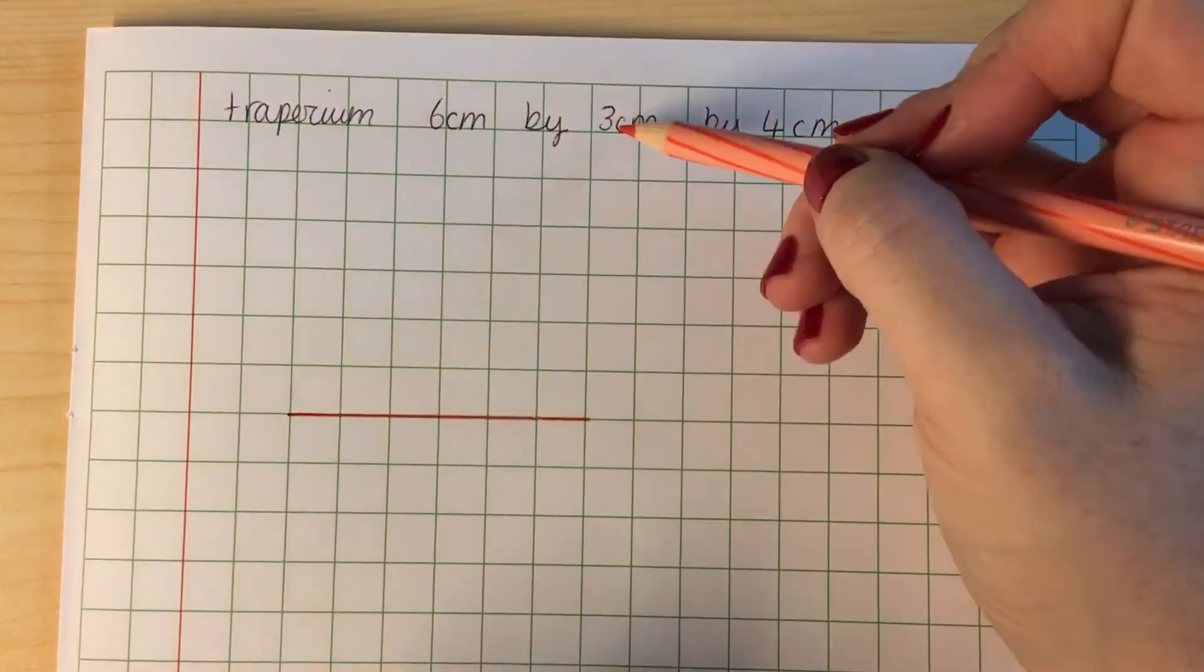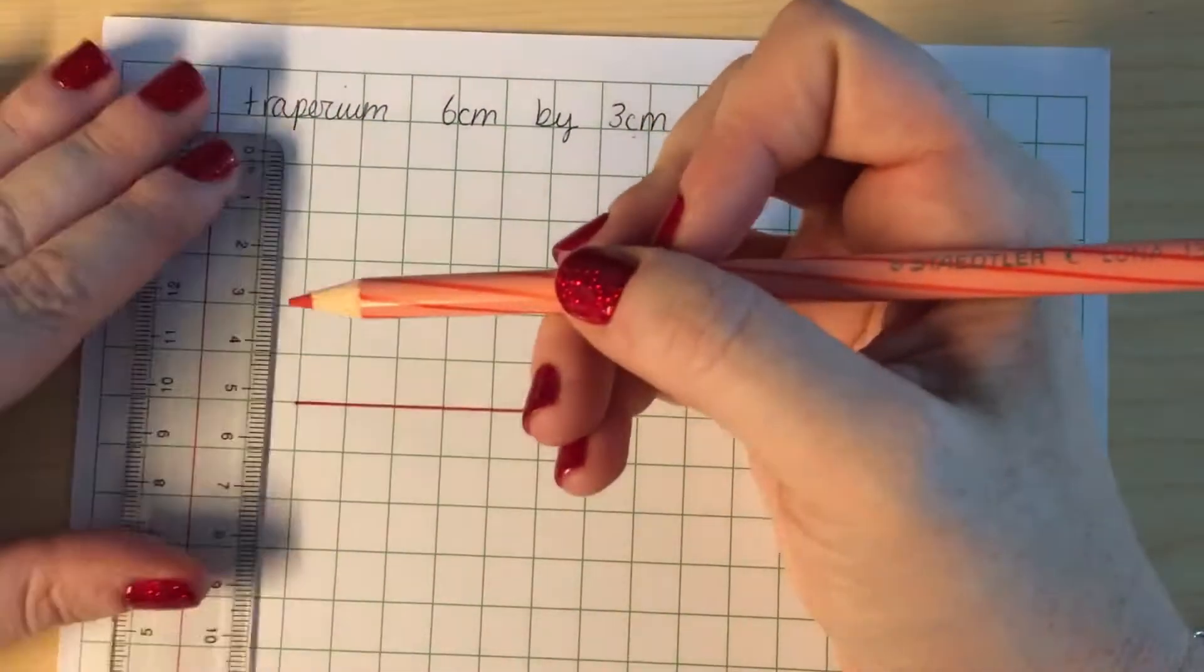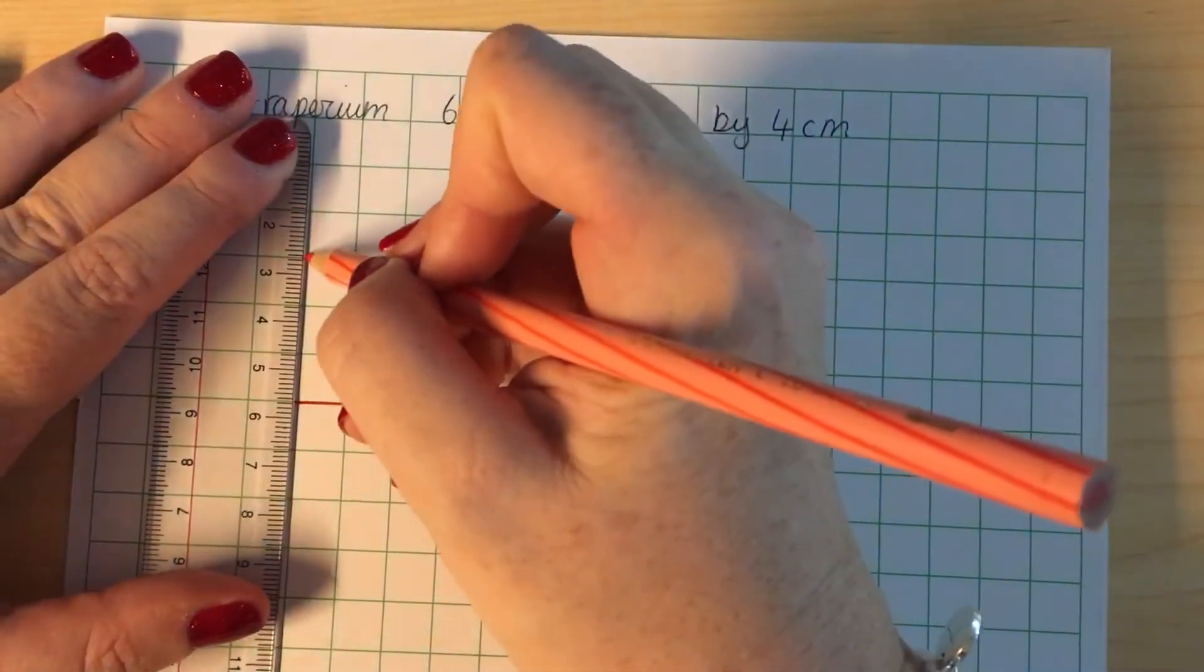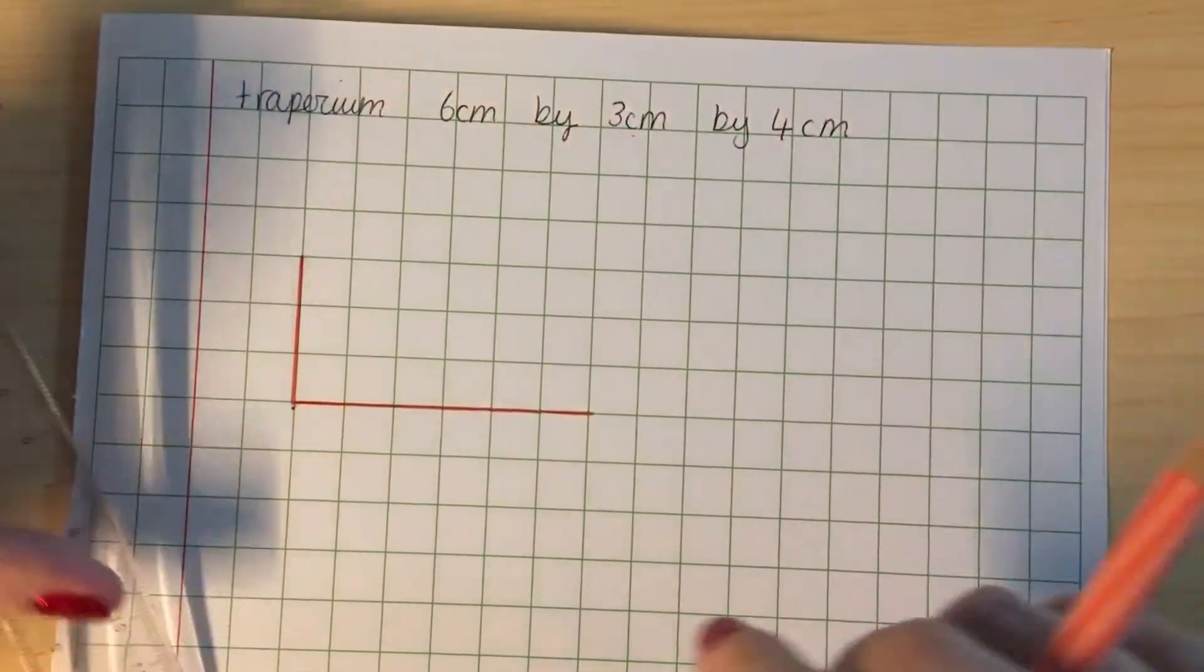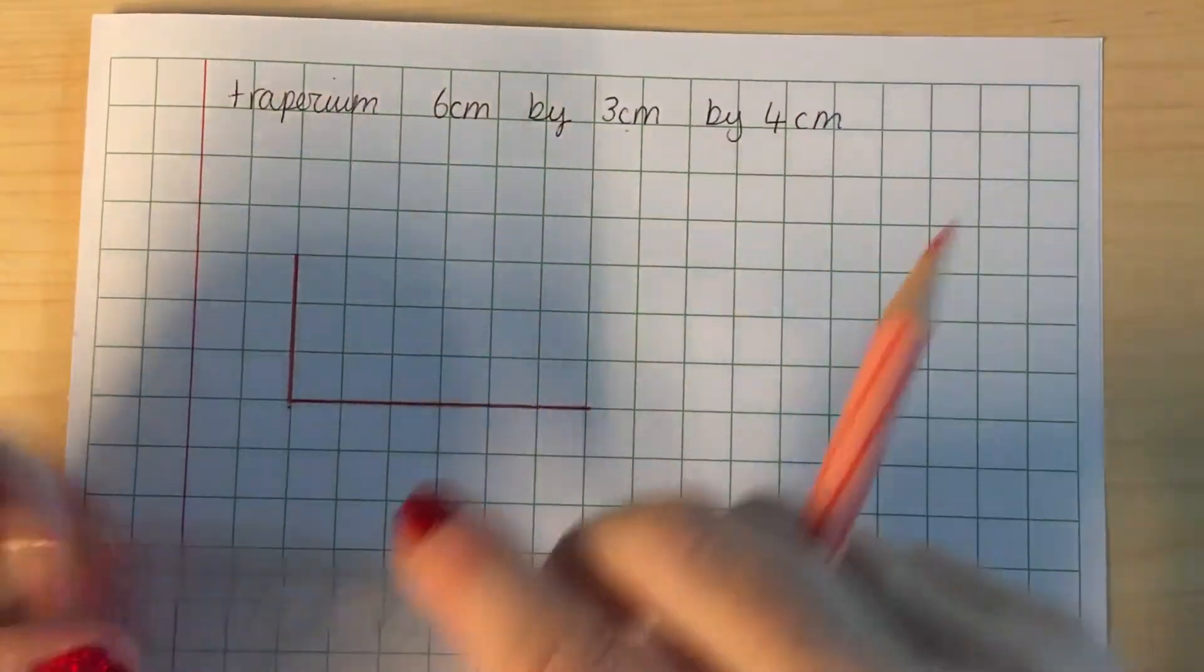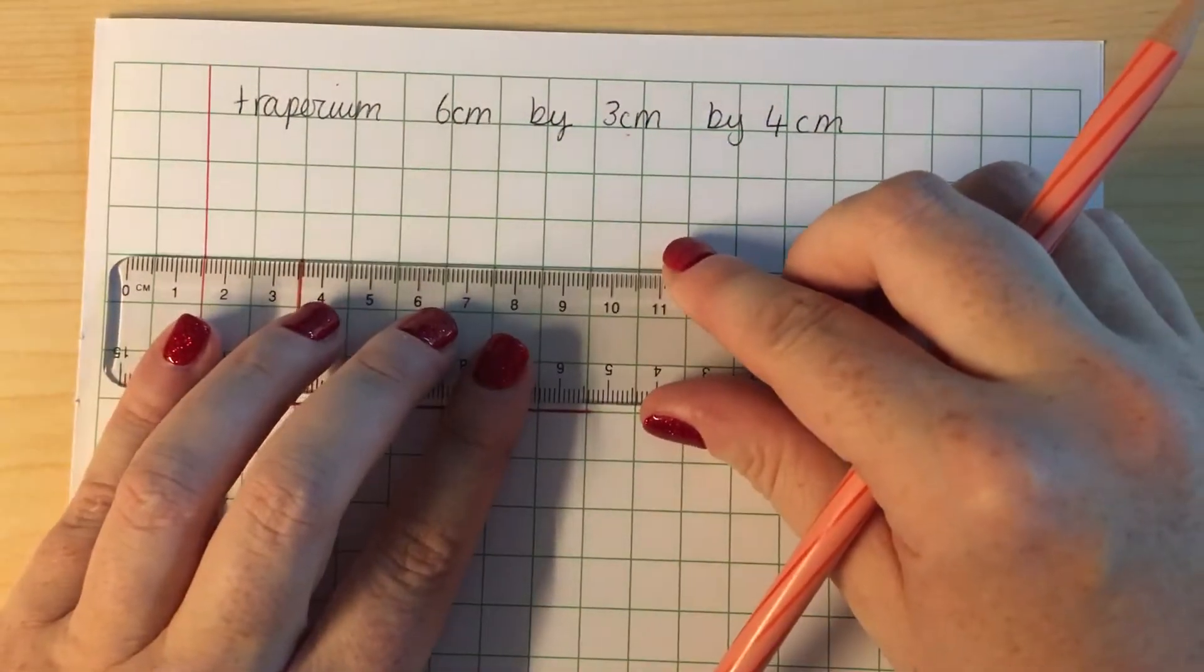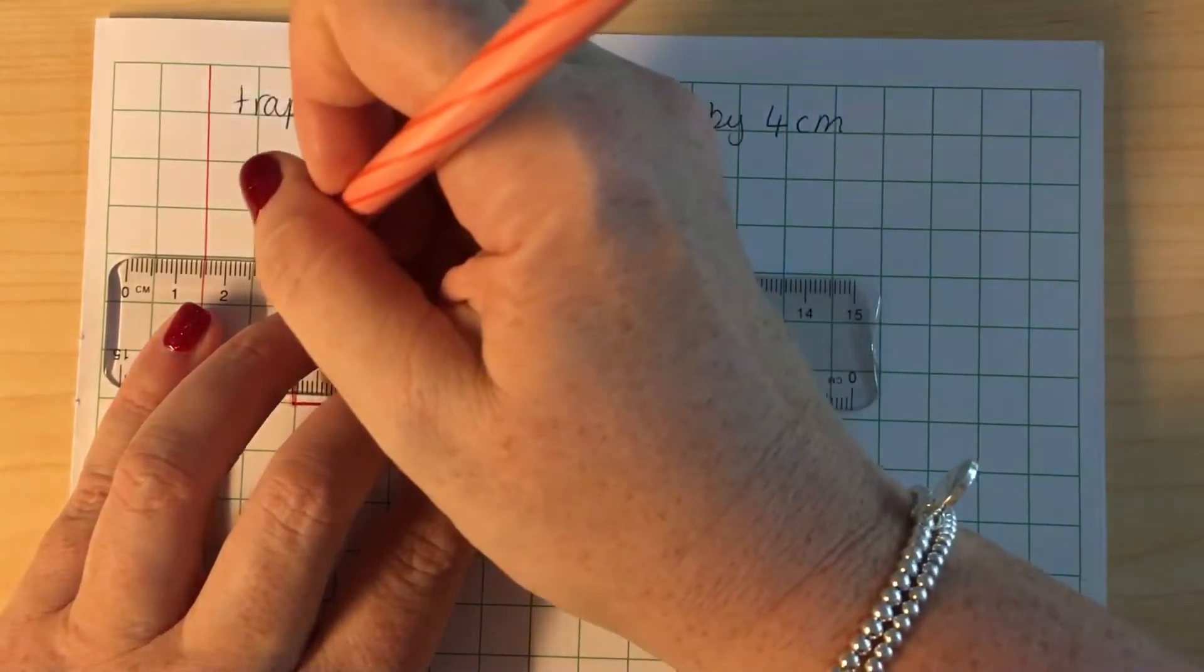Alright, then the second number represents the side, so we're going to go up 3. 3, and then the third number represents going across the top, so 4.